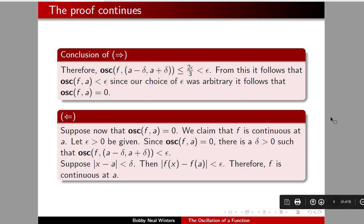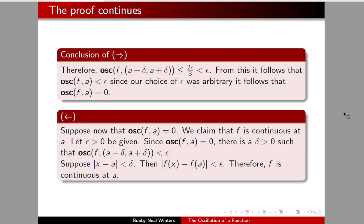Now let's go the other direction. Suppose the oscillation equals zero; we claim that f is continuous at a. Let ε > 0 be given. Since the oscillation of f at a is zero, there is a δ such that the oscillation of f on (a - δ, a + δ) is less than ε. Suppose |x - a| < δ; then it follows that |f(x) - f(a)| < ε, and therefore f is continuous at a.